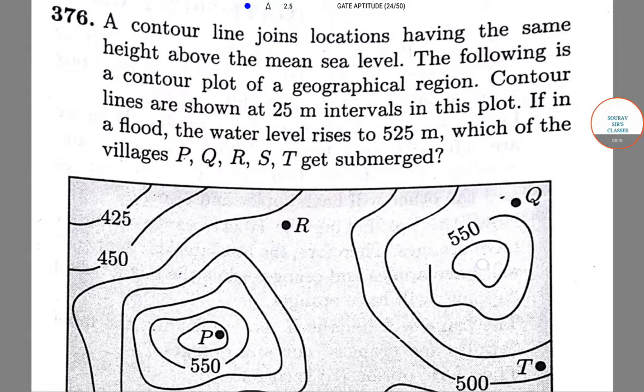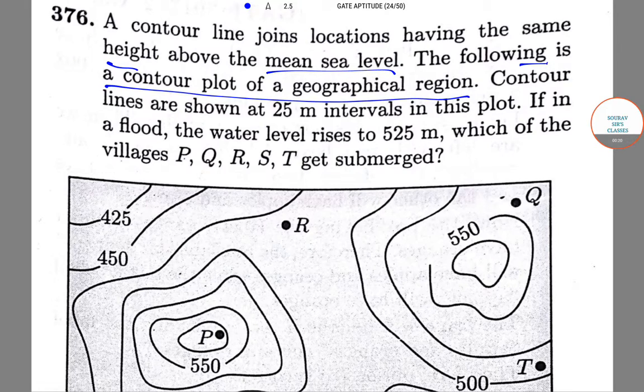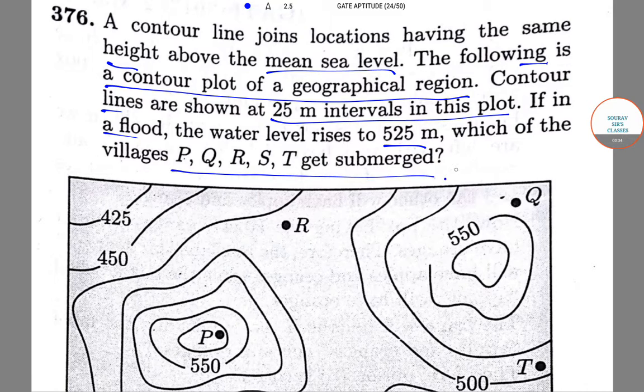The question is, a contour line joins locations having the same height above the mean sea level. The following is a contour plot of a geographical region. Contour lines are shown at 25 meter intervals in this plot. If in a flood, the water level rises to 525 meters, then which of the villages P, Q, R, S, T gets submerged?